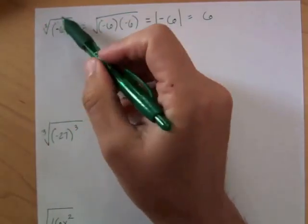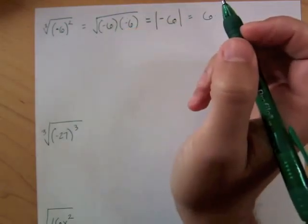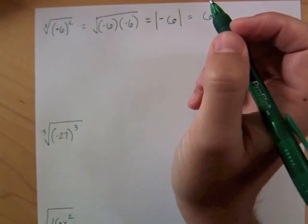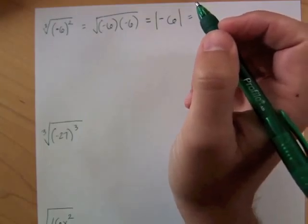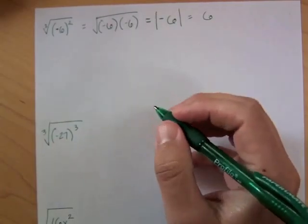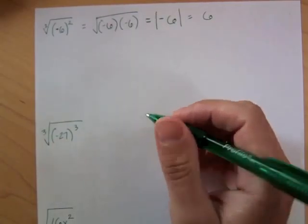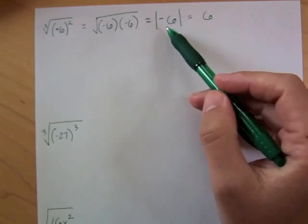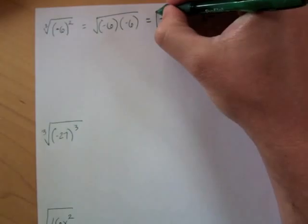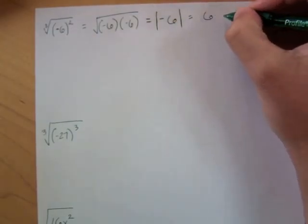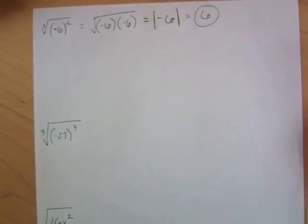If the index is even, the root cannot be negative. You can't take a square root, a fourth root, or a sixth root and get a negative answer — that's one of the rules of radicals. With an odd index, negatives are totally fine. With an even index, you cannot get an answer that is negative. So whenever you have an even index, like a square root, you take the answer — in this case negative 6 — and apply the absolute value to get positive 6 as the actual root.